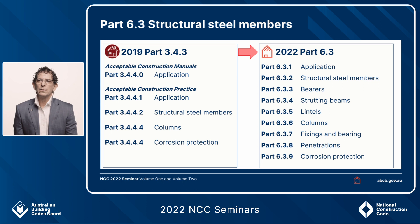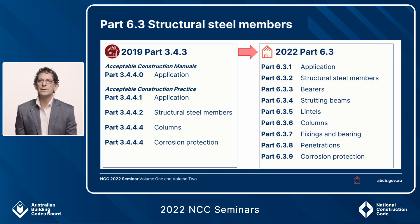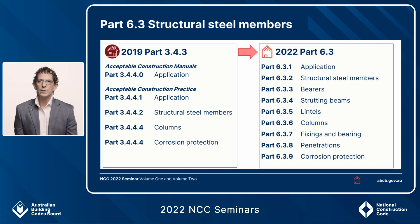Structural steel members — a comparison between 2019 Volume 2 and Part 6.3 in the housing provisions is set out here. What we've done is more clearly articulate separate parts for different structural steel members: 6.3.2 structural steel members overall, and then we go into bearers, strutting beams, lintels, and columns, all the way through to corrosion protection, which is an existing set of tables in 2019.